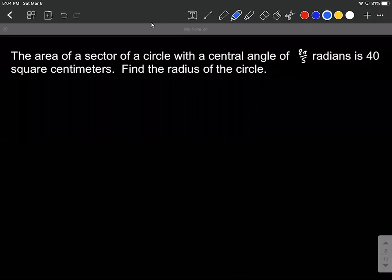All right, the area of a sector of a circle with a central angle of 8π over 5 radians is 40 square centimeters. We are asked to find the radius of the circle.